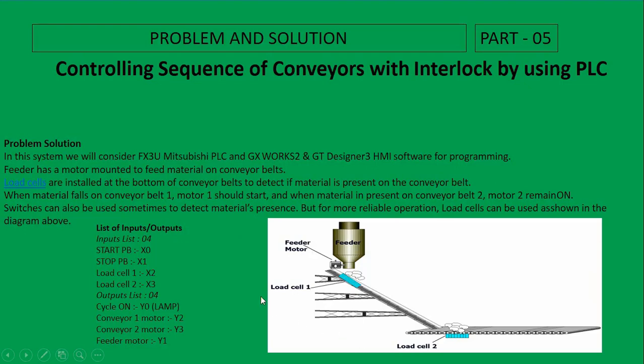When material falls on conveyor belt 1, motor 1 should run. This is load cell 1 and here is motor 1. When material is present on conveyor belt 2, motor 2 runs. Switches can also be used to detect material presence, but for more reliable operation load cells can be used, as shown in the diagram.